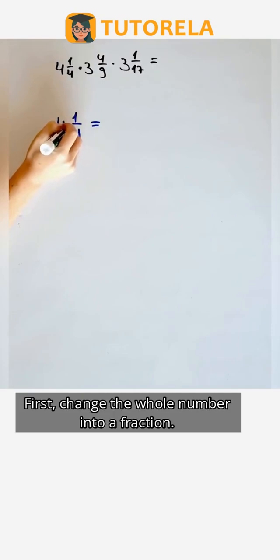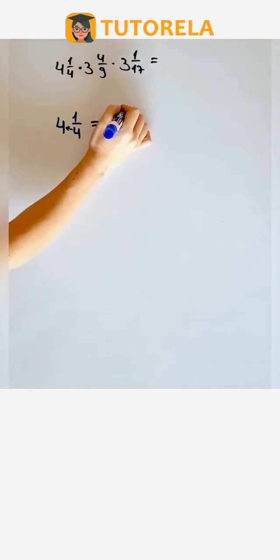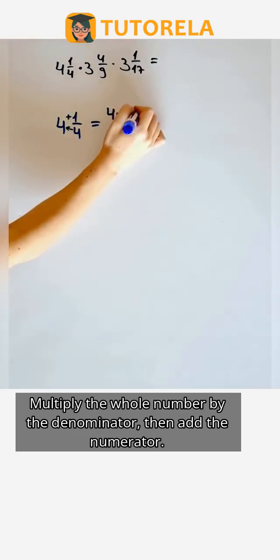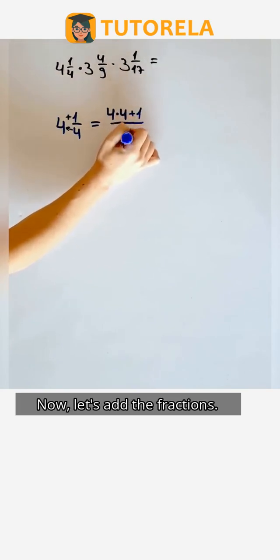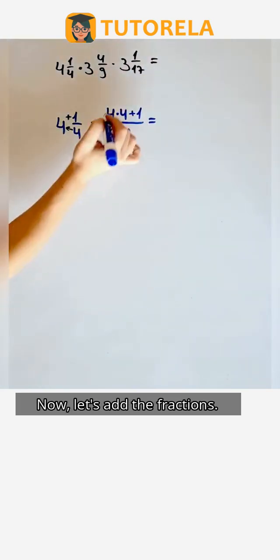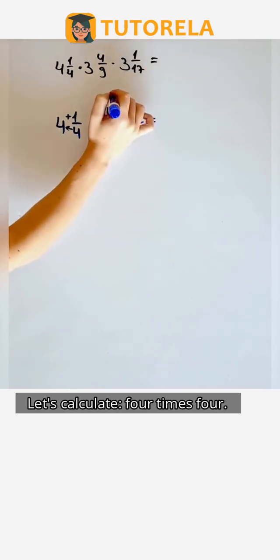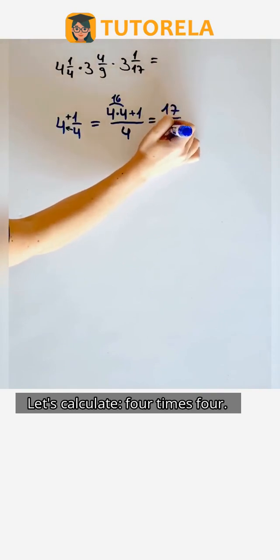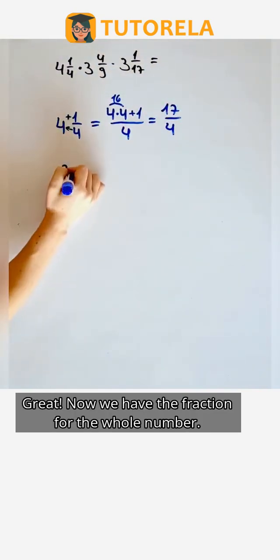First, change the whole number into a fraction. Multiply the whole number by the denominator, then add the numerator. Let's calculate 4 times 4. Great, now we have the fraction for the whole number.